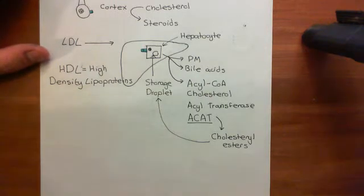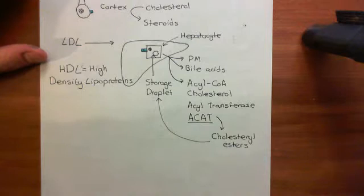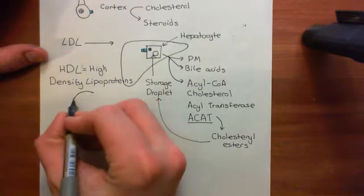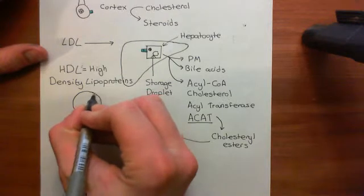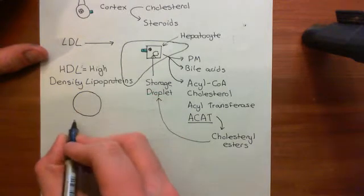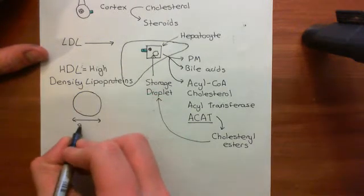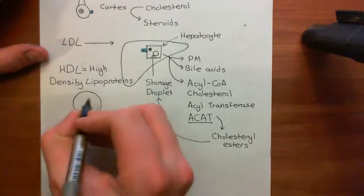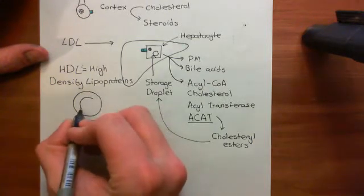Let's start with the structure of high-density lipoproteins. Basically, they are the ones with the diameter between 8 and 11 nanometers. So they are very, very small little particles.